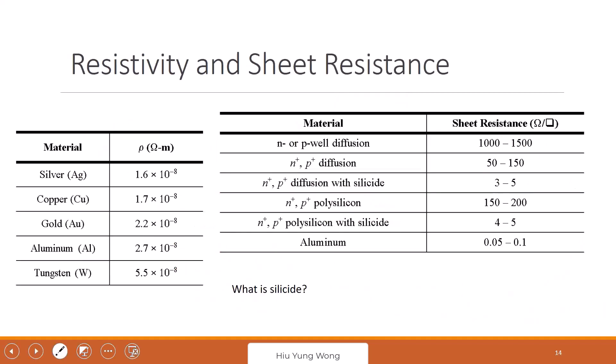So here shows the resistivity and sheet resistance. Resistivity is material dependence. You see that copper is the best except silver. But why don't we use silver? Very simple, because silver is very expensive. We are not going to spend so much money just to get a little bit improved in resistivity.